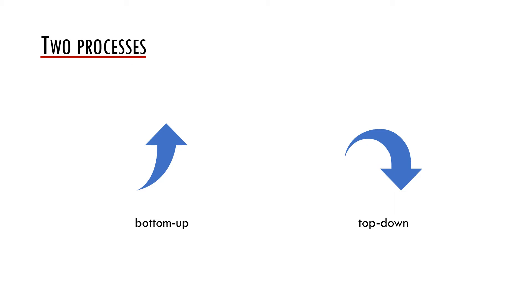While discussing language comprehension in general we may focus on two types of processes. On one hand there are bottom-up processes, which use the information from the lowest levels from which they build up the higher structures. On the other hand we also use the so-called top-down processes, which employ various sources of information to process the linguistic signal.